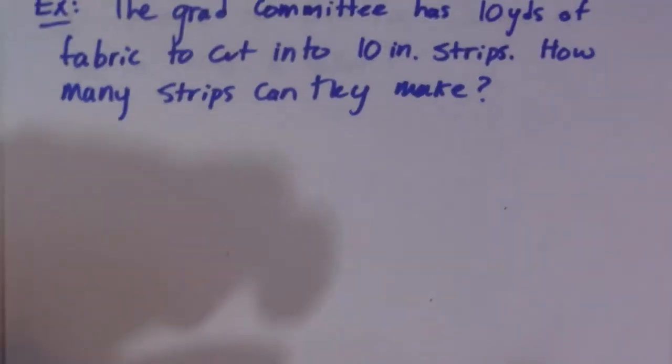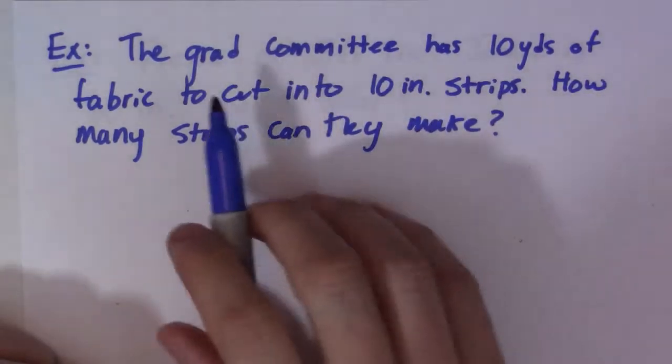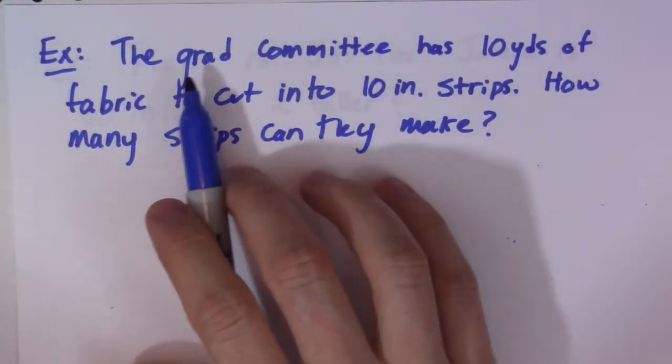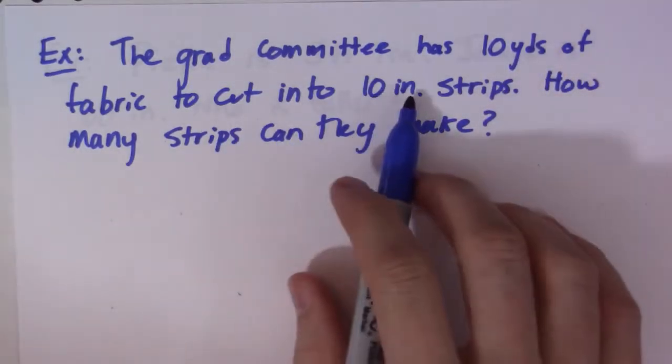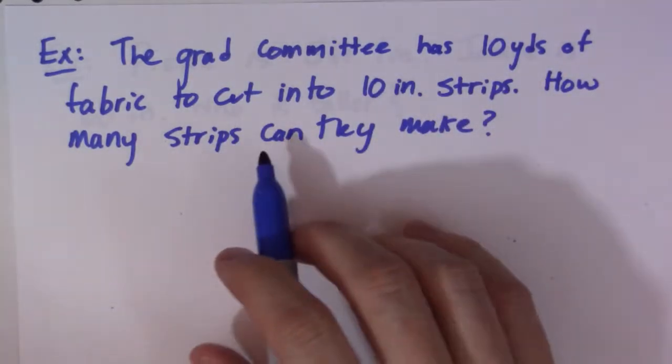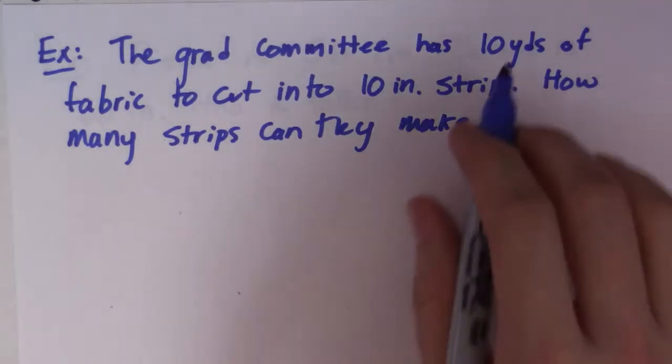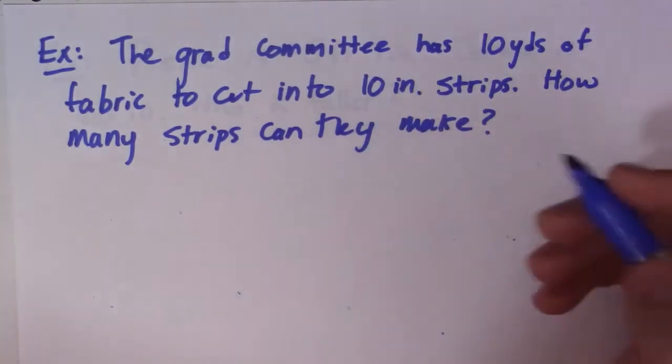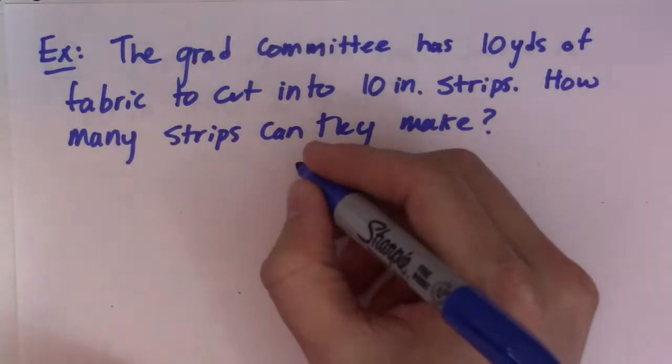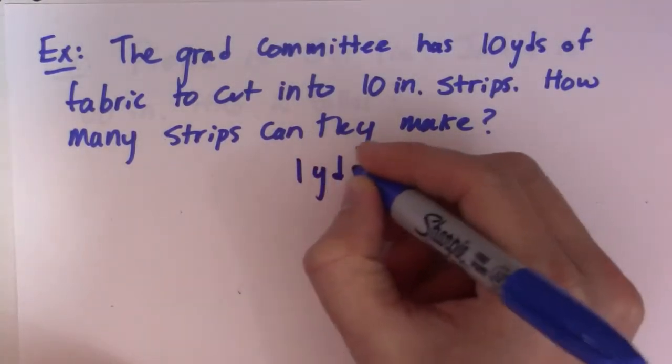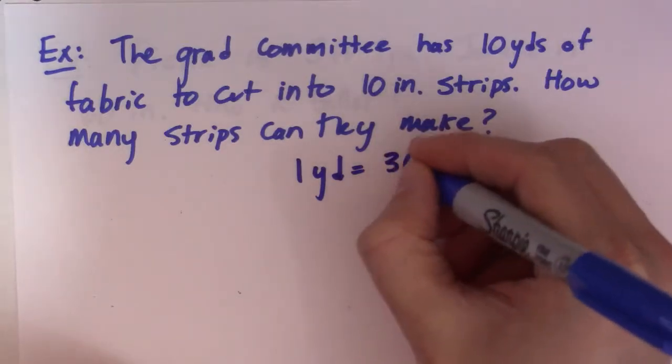Let's look at this question. The grad committee has 10 yards of fabric to be cut into 10-inch strips. How many strips can they make? So again, we have yards and inches going on here. This is an imperial unit, so we need to know the conversion between the two. The conversion is that one yard is equal to 36 inches.